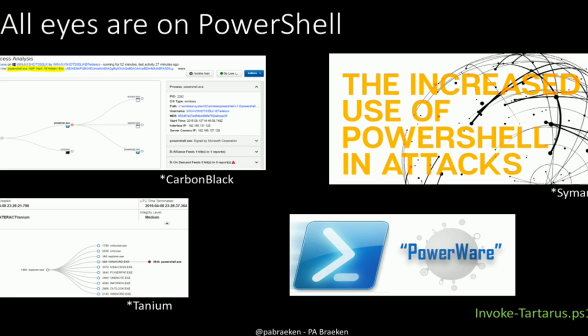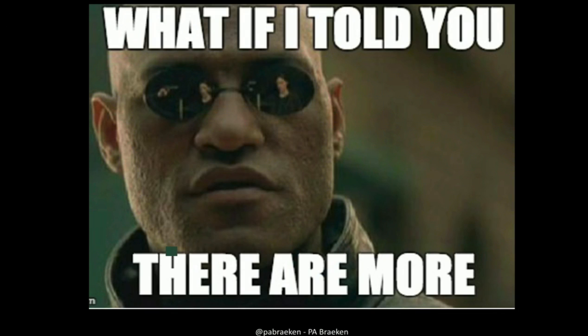Currently all eyes of security folks are on PowerShell. You have a lot of tools that can detect PowerShell activities now, like Carbon Black, but also some endpoint antiviruses like Symantec. They did a very good white paper about the increased use of PowerShell in attacks and patterns they can detect. There's also PowerAway, which runs in memory, and I did a script on my GitHub called Invoke-Tartarus that does the same thing — running in memory with encrypted files.